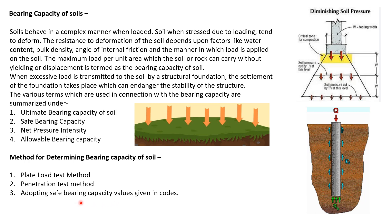Now coming to the bearing capacity of soil. Soil behaves in a complex manner when loaded. The resistance to deformation depends on factors like water content, bulk density, angle of internal friction, and the manner in which the load is applied. The maximum load per unit area that soil or rock can carry without yielding or displacement is termed as the bearing capacity of the soil. When excessive load is transmitted, settlement of the foundation takes place which can endanger stability. Key terms include ultimate bearing capacity, safe bearing capacity, net pressure intensity, and allowable bearing capacity. Methods for determining bearing capacity include the plate load test method, penetration test method, and adopting safe bearing capacity values given in codes.